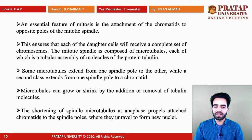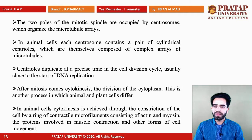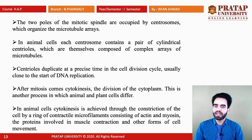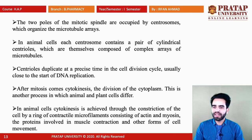Shortening of spindle microtubules, which occurs at anaphase, propels attached chromatids to the spindle poles, where they form a new nucleus. The two poles of the mitotic spindle are occupied by centrosomes, which form microtubule arrays. In animal cells, each centrosome contains a pair of cylindrical centrioles, which are themselves composed of complex arrays of microtubules.